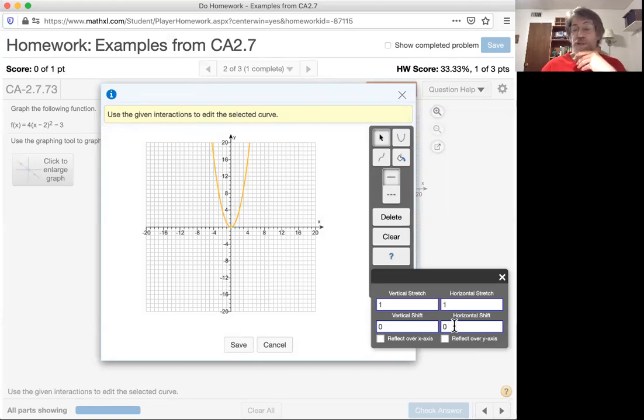Horizontal shift, like I said, it's a shift to the right. Because it's to the right, we'll use a positive two. Vertical shift goes in this little box. Notice how the graph begins to change as you enter various things. The vertical shift is three units down. To indicate down, we'll use negative three.